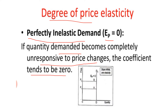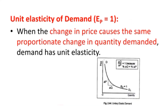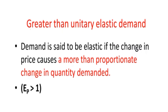Perfectly elastic demand occurs when demand for the product increases while price remains constant. Unitary elastic demand (Ep = 1) occurs when a change in price causes the same proportional change in quantity demanded — whatever change occurs in price, the same change occurs in quantity demanded.